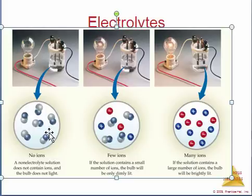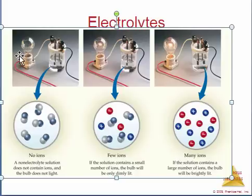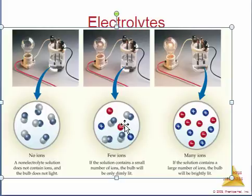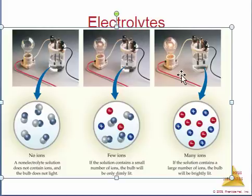If we have a non-electrolyte dissolved in water — indicated by molecules with no charge — the light bulb will not light up. If we have a weak electrolyte where something dissociates slightly into ions, it will light up a little bit. But if everything that is dissolved goes into ions, the light bulb will light up brightly. So: non-electrolyte, weak electrolyte, and strong electrolyte.